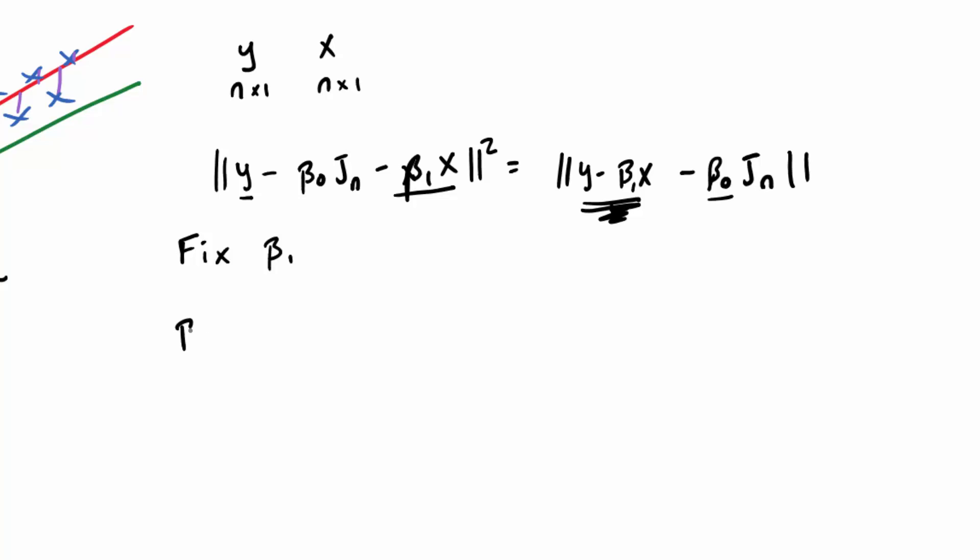So what we know is that beta naught, as it depends on beta 1, has to go through the point 1 over n, y minus beta 1 x times jn transpose, which works out to be y bar minus beta 1 x bar.